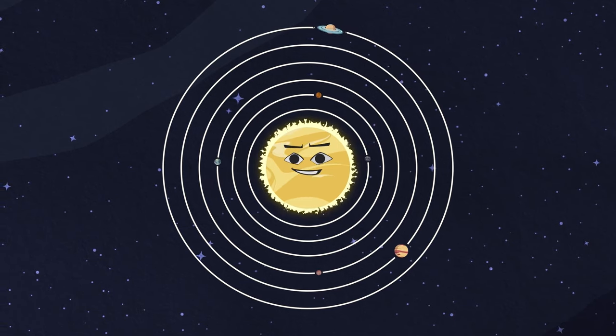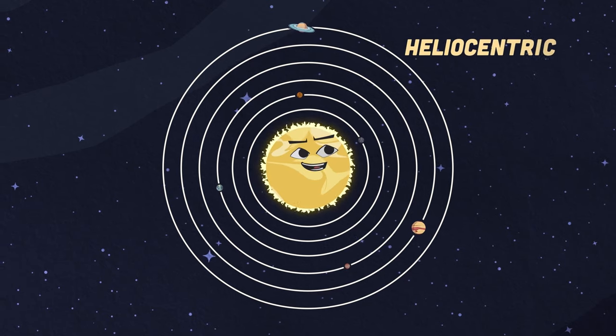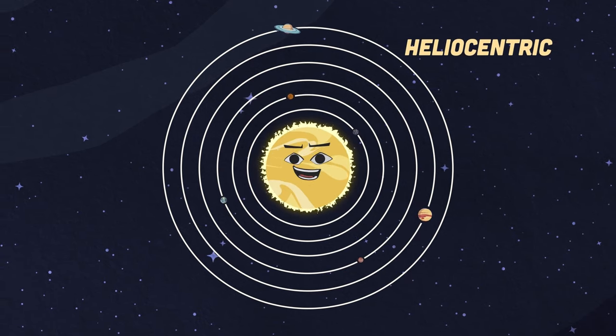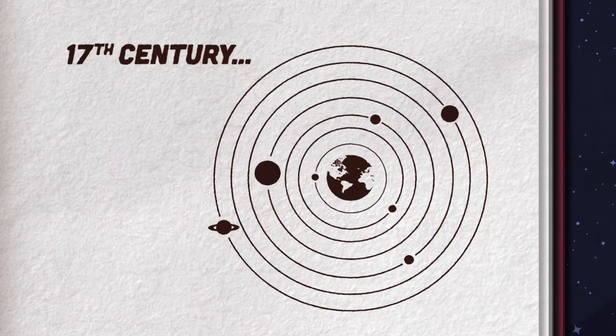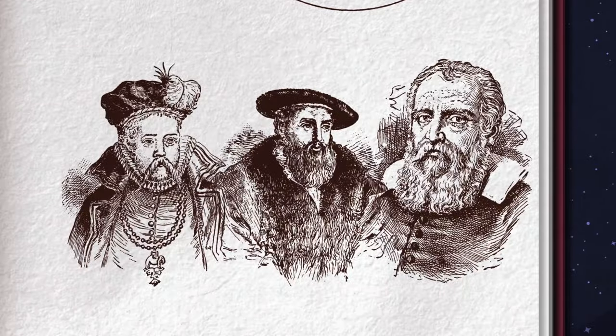This new theory of the solar system revolving around the sun was called the heliocentrism model. In the 17th century his idea did take hold when evidence was compiled by these astronomers.